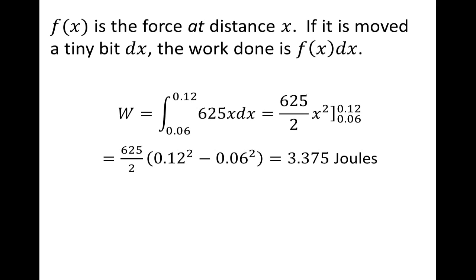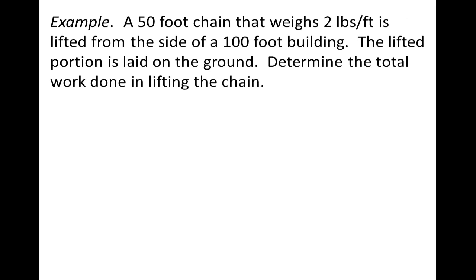Our second example involves another case in which something varies. In the first example, the force varied. Here, we're going to be lifting a 50-foot chain that weighs 2 pounds per foot, lifting it from the side of a 100-foot building. The 100-foot building ensures no chain is left on the ground. As the chain is lifted onto the roof, the lifted portion is laid down and no longer adds weight, so the chain gets lighter as we go. We want to find the total work done in lifting the chain.